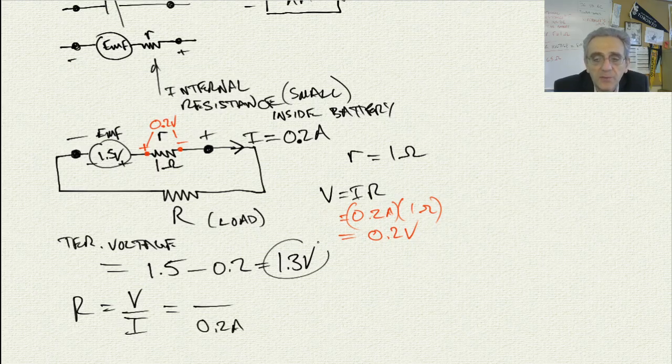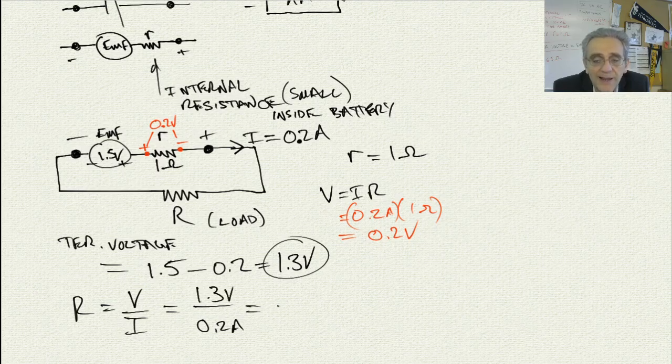Well, we know that as well because it's the 1.3 over the terminal, because it's 1.5 minus the drop across the internal resistor. So if we put 1.3 here, we'll get a resistance of 6.5 ohms.